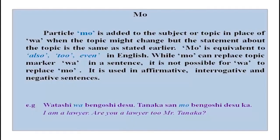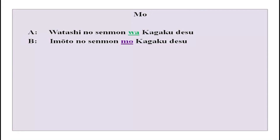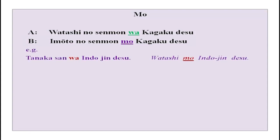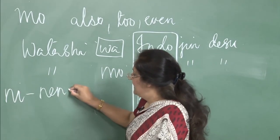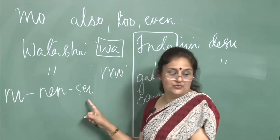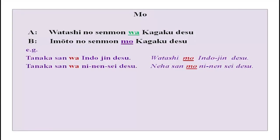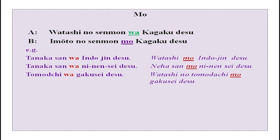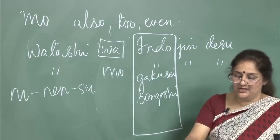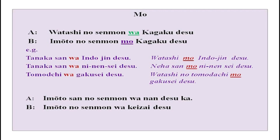Tanaka-san wa indojin desu. Watashi mo indojin desu. Tanaka-san wa ninensei desu. Neha-san mo ninensei desu — ninensei means second-year student. Tomodachi wa gakusei desu. Watashi no tomodachi mo gakusei desu — my friend is also a student. Imooto-san no senmon wa nan desu ka? Imooto no senmon wa keizai desu.